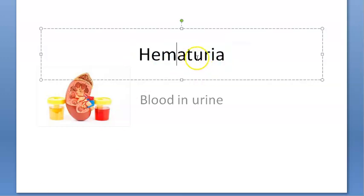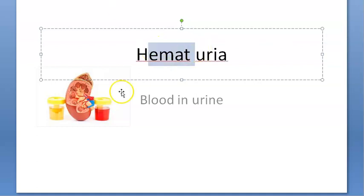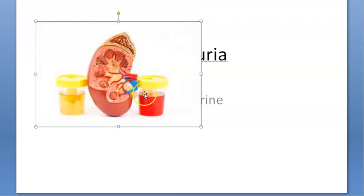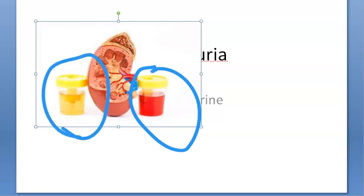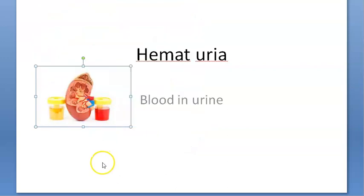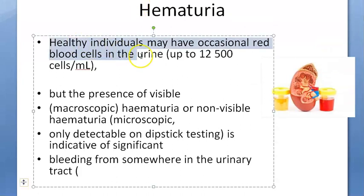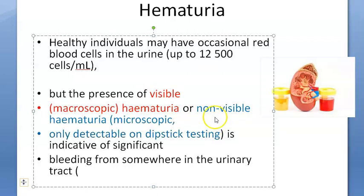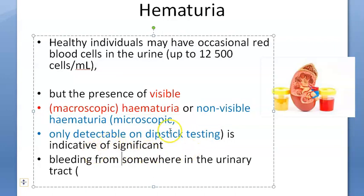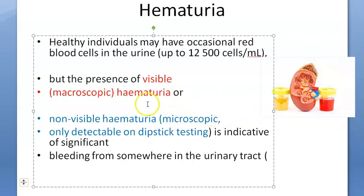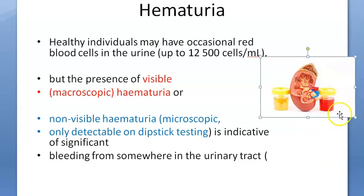In this video, let us look at hematuria - blood in the urine. The urine may have visible hematuria or invisible hematuria, meaning there can be RBCs detectable only under a microscope. In a normal person, there can be some RBCs in the urine. Visible hematuria is macroscopic, non-visible hematuria is microscopic, or detectable only on a dipstick. So there are two types: visible hematuria and non-visible hematuria.